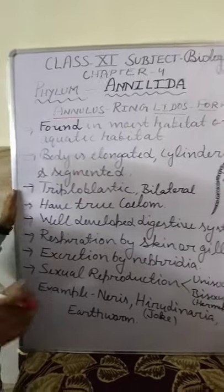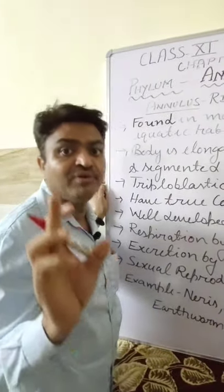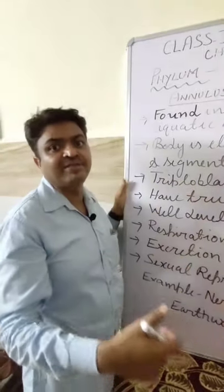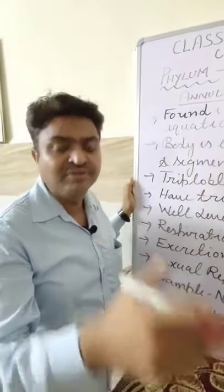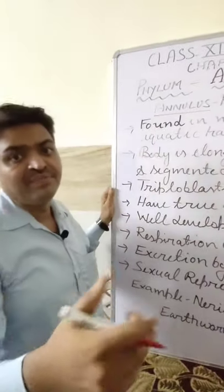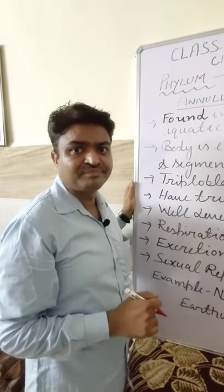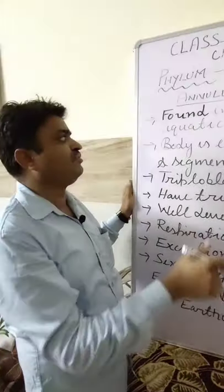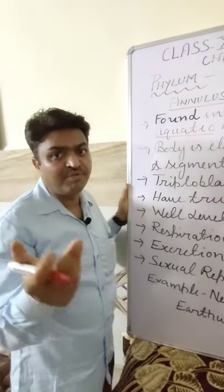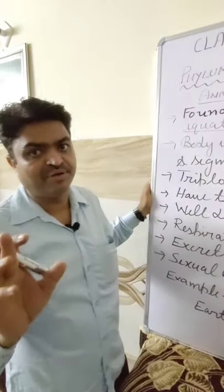They are found in most habitats. In which habitat are they found? In moist terrestrial habitat, means the habitat that is found near water sources. Most of the animals are found near the aquatic habitat. They are also found in the aquatic habitat — so in both types of habitat, aquatic as well as terrestrial.